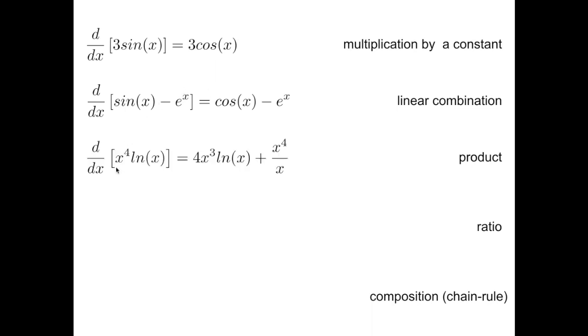For a product, here I'm taking the derivative of the fourth power of x times the log, and by taking the derivative of the first times the second plus the derivative of the second times the first, you might easily prove that this is what you obtain.